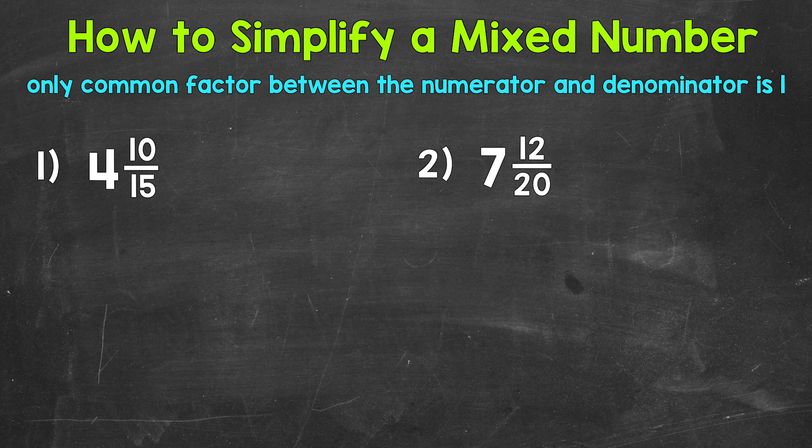So let's jump into our examples and see exactly what I mean by that. So for number one, we have 4 and 10 fifteenths. So remember, when we simplify a fraction, we are looking for common factors that we can divide both the numerator and denominator by. We want to break the fraction down to the lowest numbers in value that we possibly can.